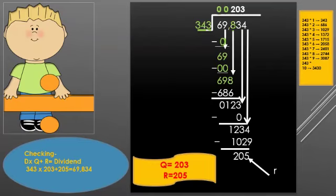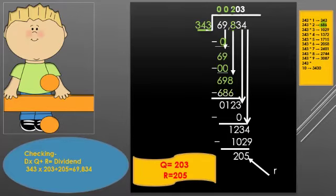Now the number is 698. We look at the multiples — 343 into 2 is 686, which fits. So we write 2 in the quotient and write 686 below. The next step is subtraction: 698 minus 686 gives 12. So here 12 is the remainder.